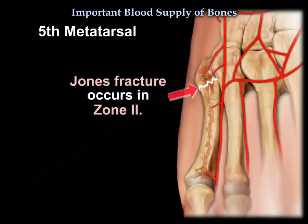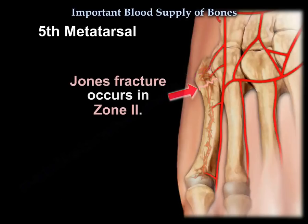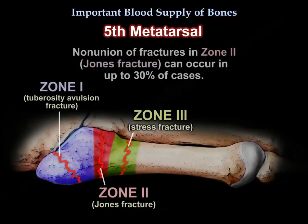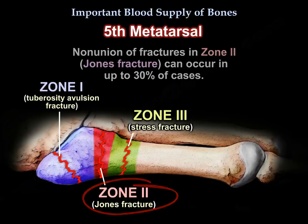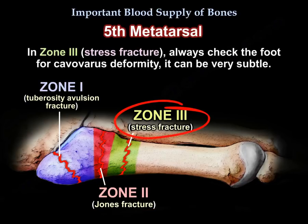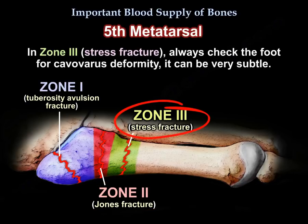Jones fracture is in zone two. Non-union of fractures in zone two can occur in up to 30 percent of cases. In zone three stress fractures, always check the foot for cavovarus deformity — it can be very subtle.